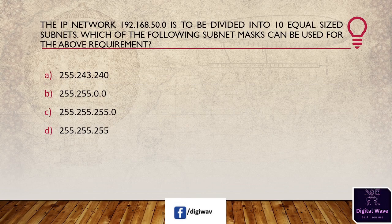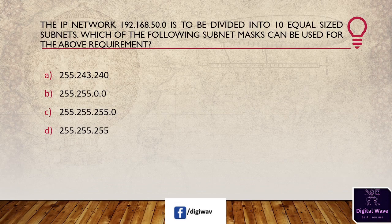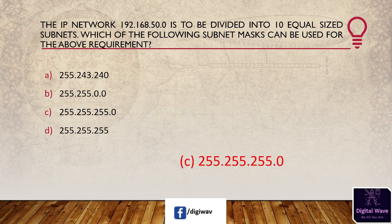Next question: the IP network 192.168.50.0 is to be divided into 10 equal-size subnets. Which subnet mask can be used? Options are: 255.243.240, 255.255.0, 255.255.255.0, and 255.255.255. The answer is C, 255.255.255.0. The address belongs to class C, so 8 bits are reserved for the host ID and 24 bits are reserved for the network ID, which is why option C is correct.